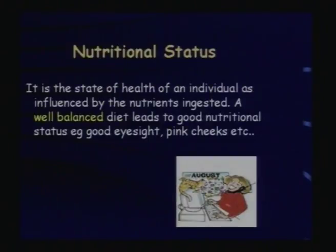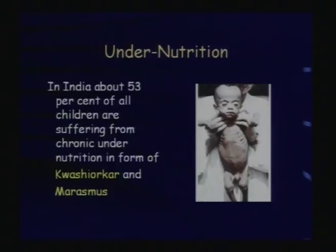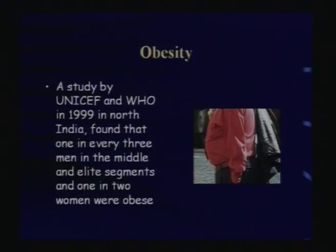Nutrients improve our nutritional status, which can be defined as the state of health of an individual as influenced by the nutrients ingested. A well-balanced diet leads to good nutritional status, seen in good eyesight, pink cheeks, and good working capability. Poor nutritional status leads to malnutrition, which includes both extremes: obesity and undernutrition. In India, about 53% of all children suffer from chronic undernutrition in the form of kwashiorkor and marasmus. At the same time, 1 in 3 men and 1 in 2 women in middle and elite segments are obese, often accompanied by diabetes, hypertension, and cardiovascular problems.